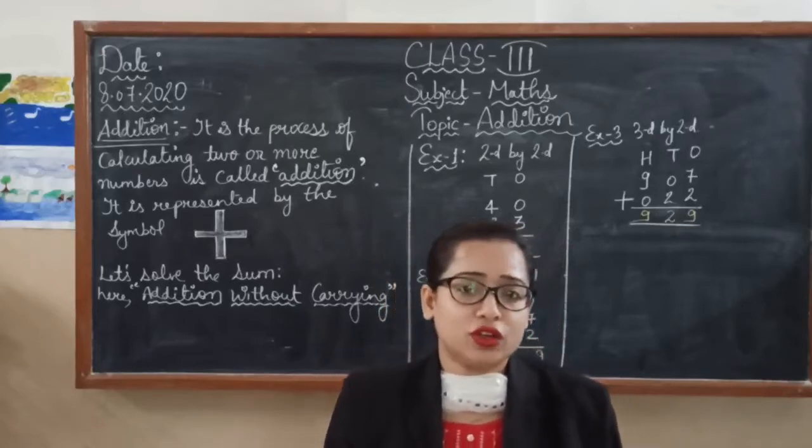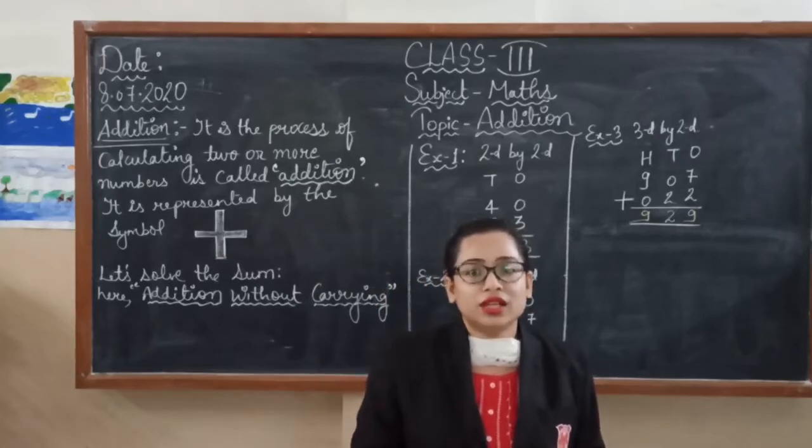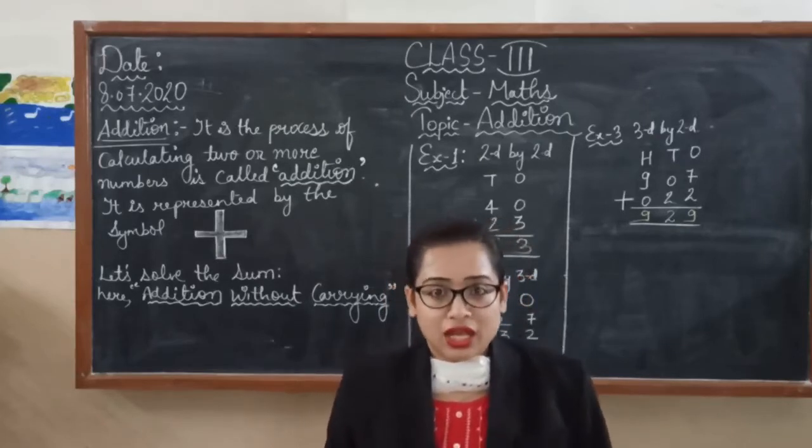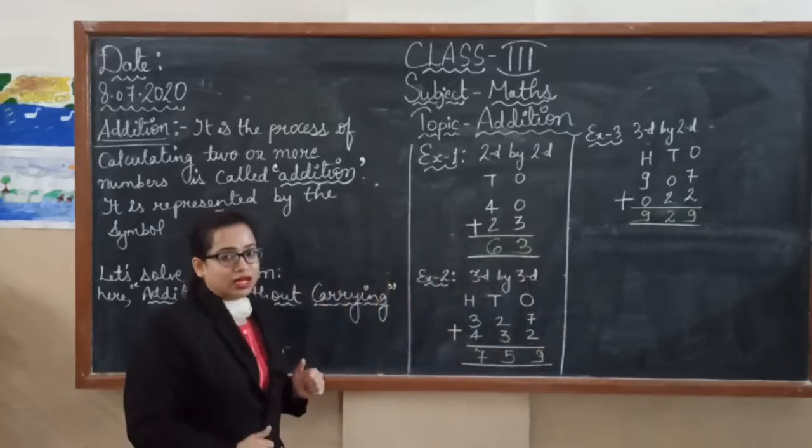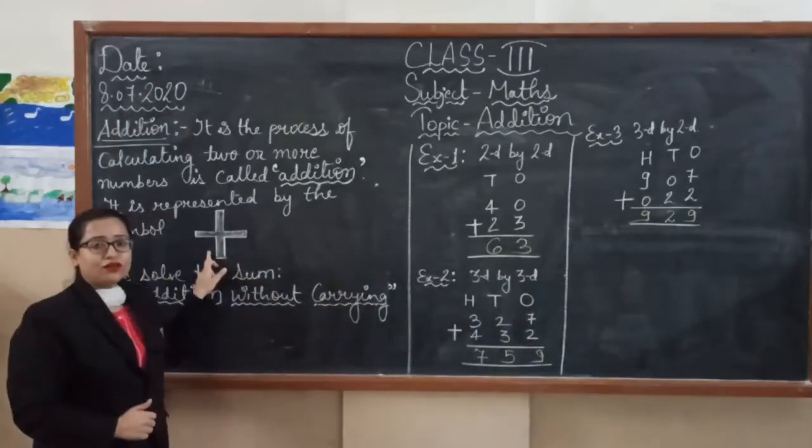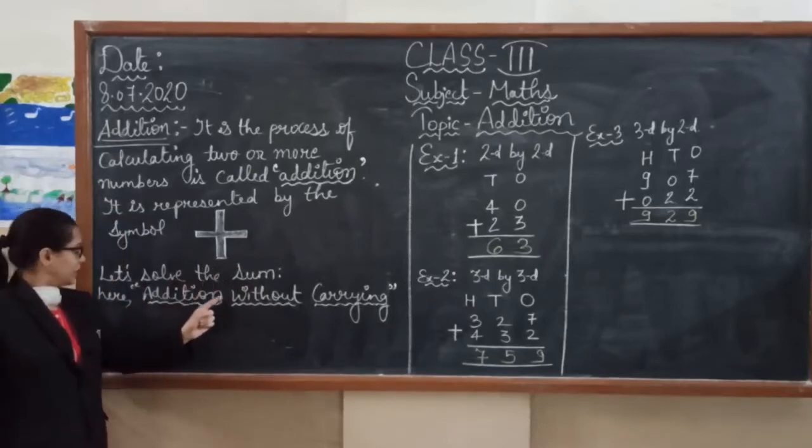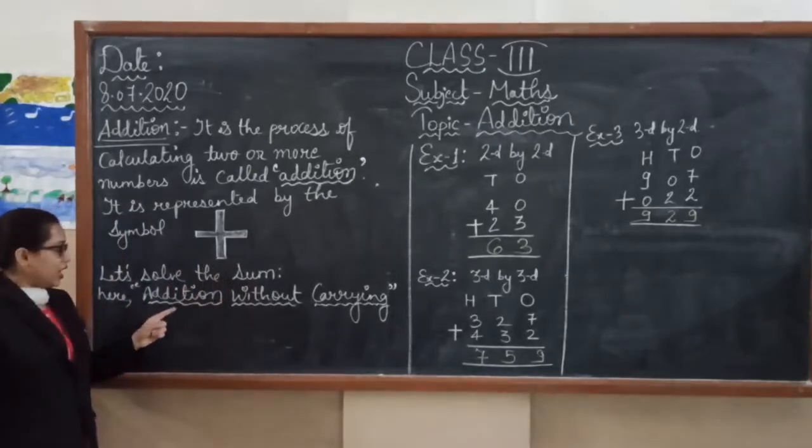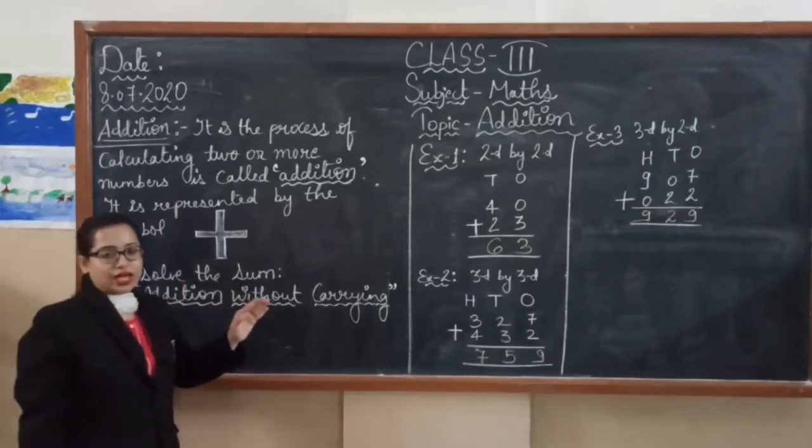The exact definition of addition is the process of calculating two or more numbers is called addition. The addition sign is represented by the plus symbol. This is the sign of addition. Let's solve this now. Here we are using addition without carry.